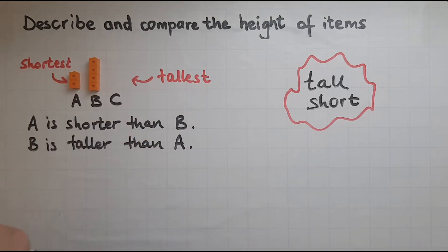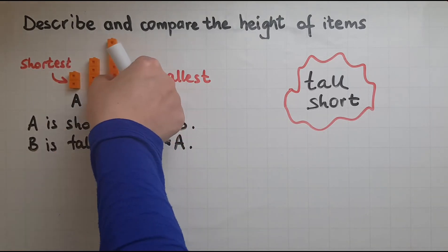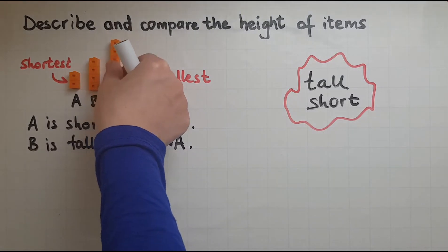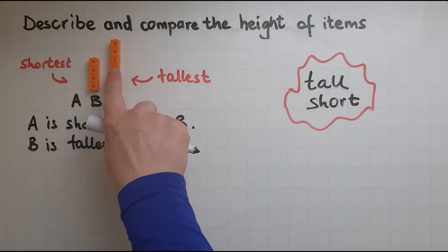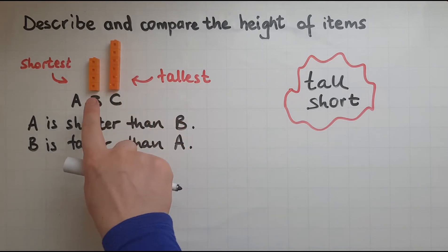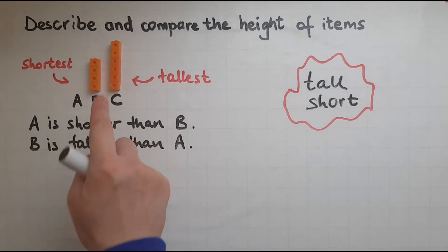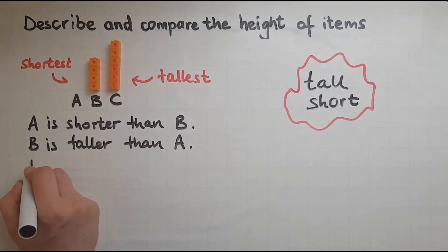Whereas B is taller than A. Now if I compare B with C, B is shorter than C.